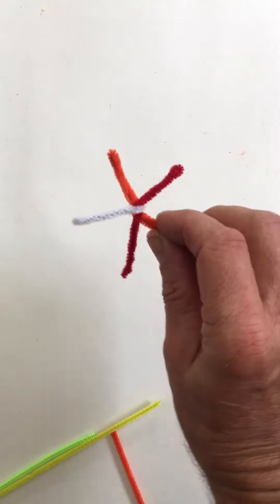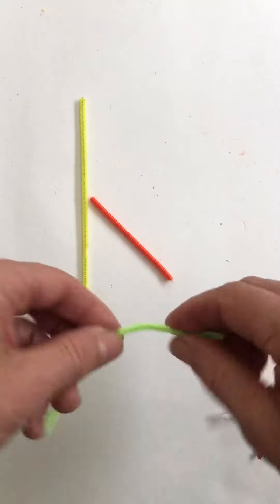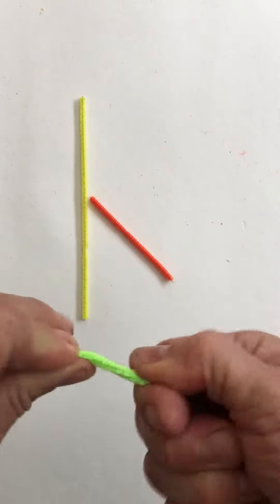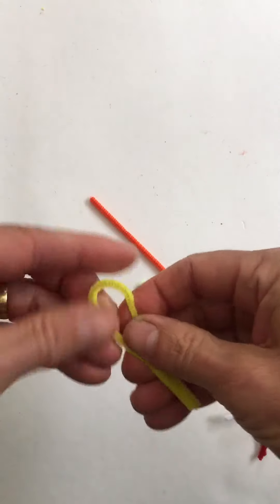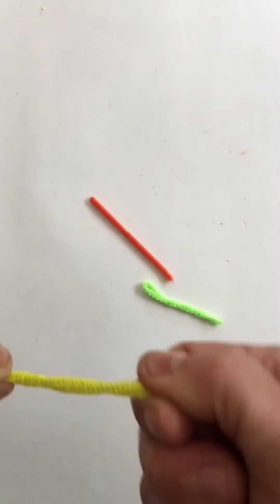So the center, you do want to do one of these twisty ties. So you need two long and one short. The two long, fold in half like before and give it a little twist. The other long one, fold in half like before, give it a little twist.